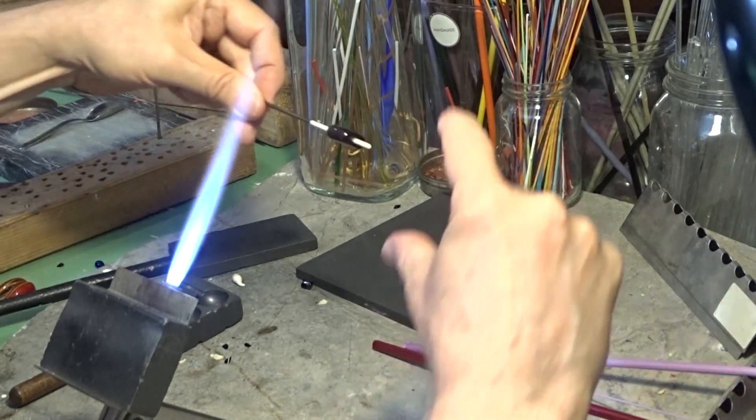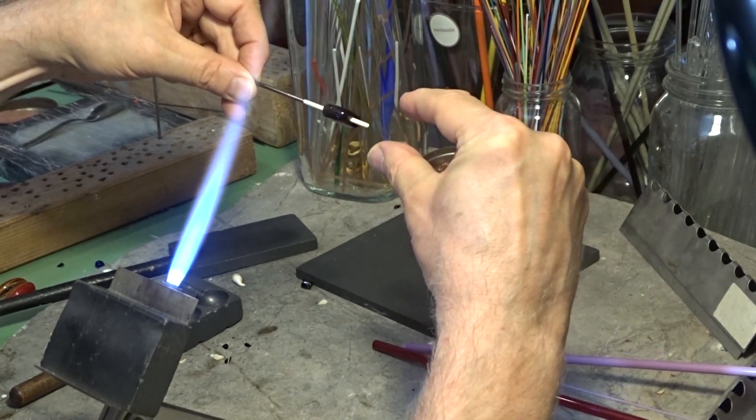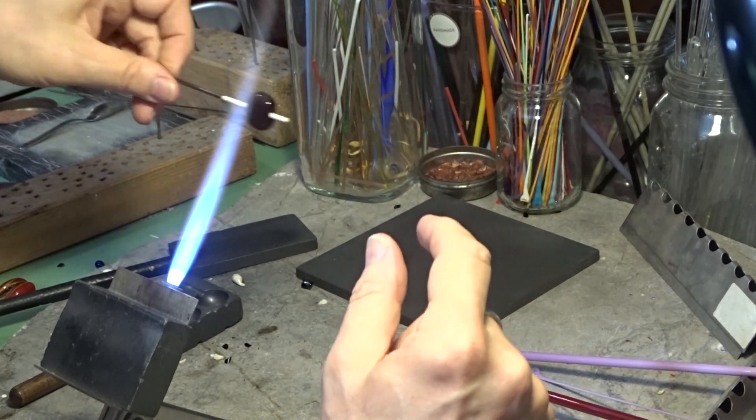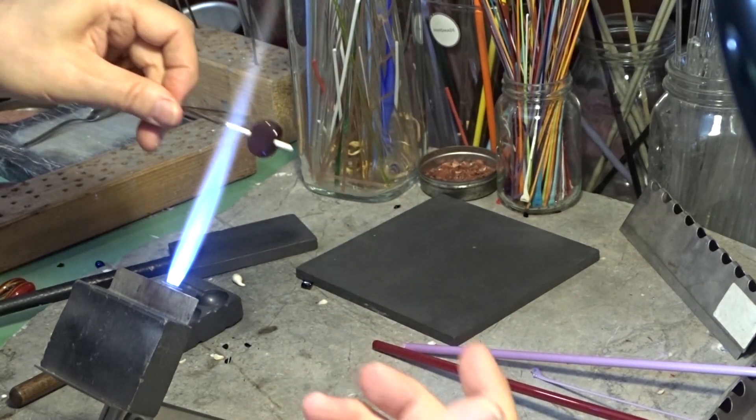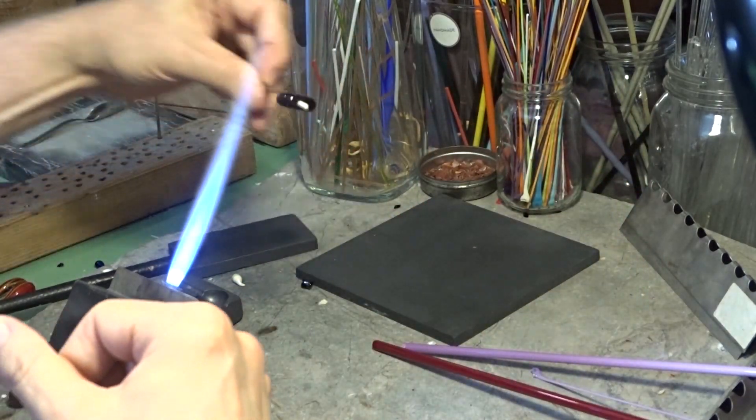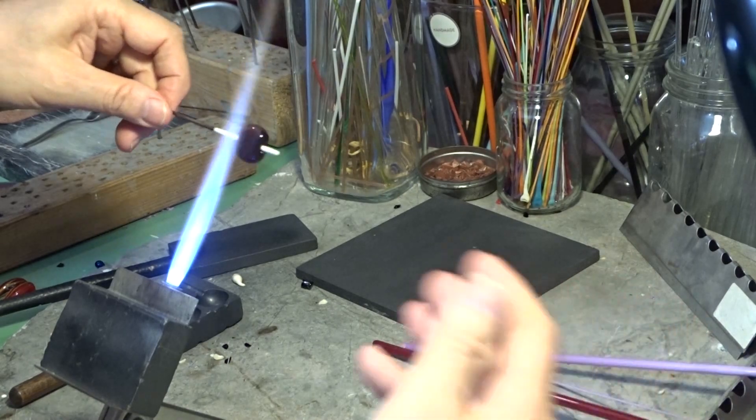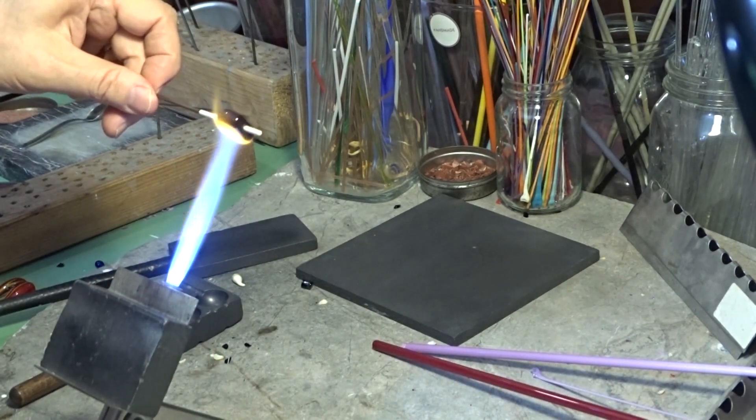So when I squish, I hold it up and watch how much I'm squishing, because I don't want to create a bead that's going to break. So always leave yourself enough room, and then flame anneal, and then the kiln anneal, and that'll give you the durability.